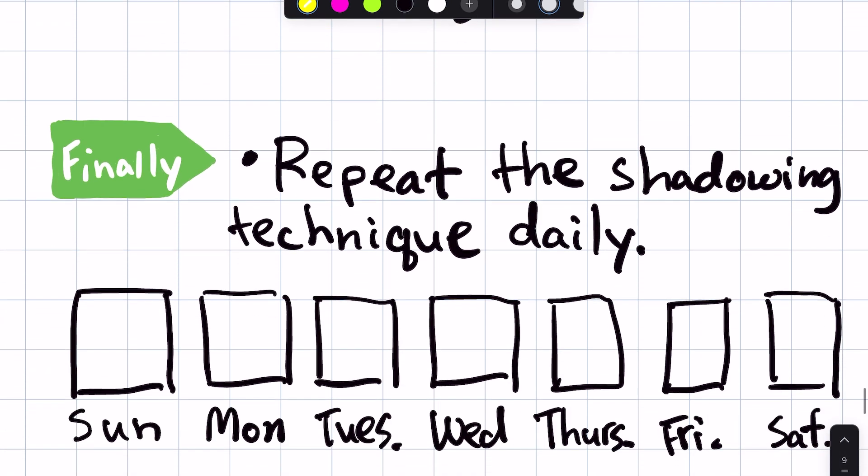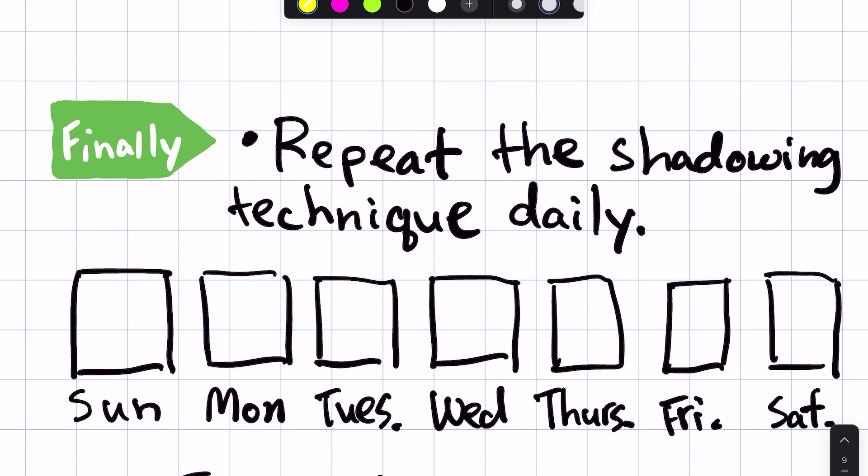And then we move on to our final step, which is repeating the shadowing technique on a daily basis. Just like we talked about earlier, the key is practice and consistency. And so you want to try to practice every day. Now, of course, life happens and sometimes you're not able to do it. But as long as you have a flow of consistency and you can see your progress getting better, then it's okay.